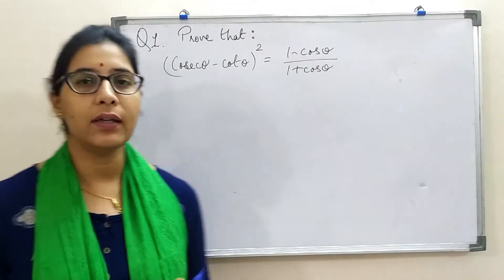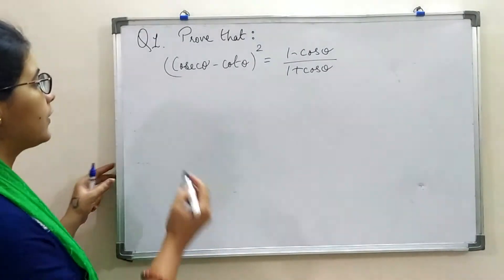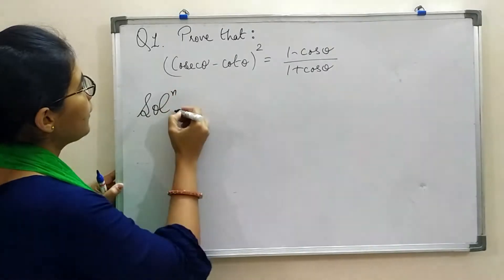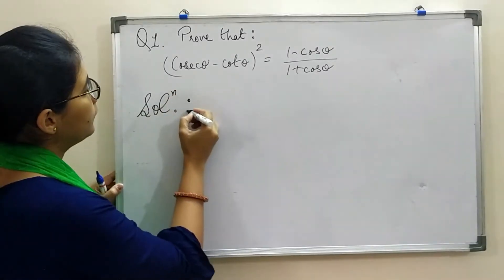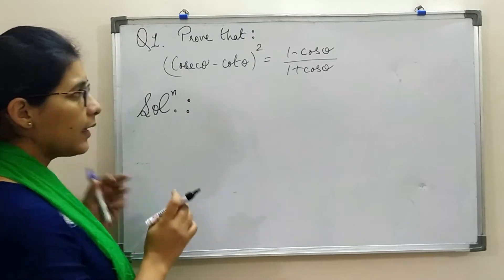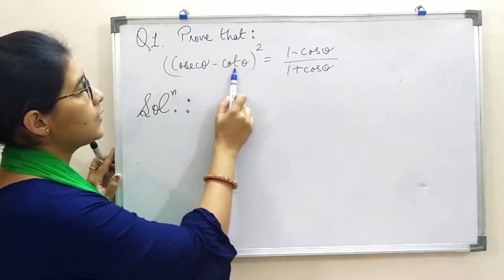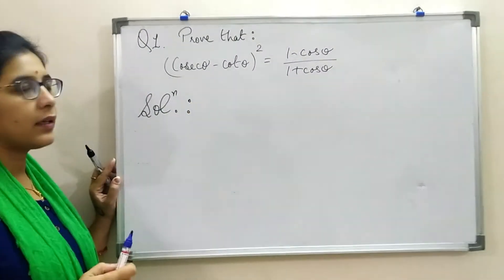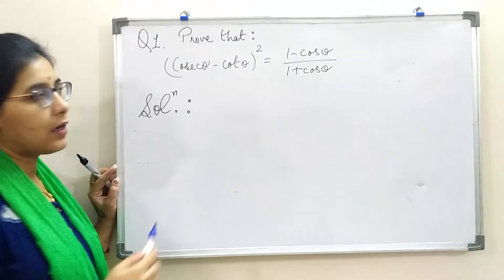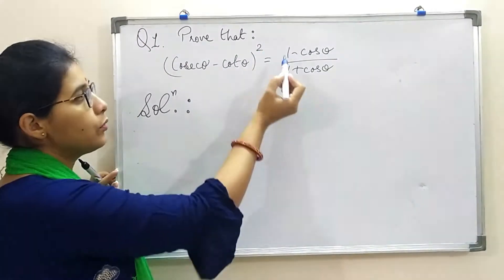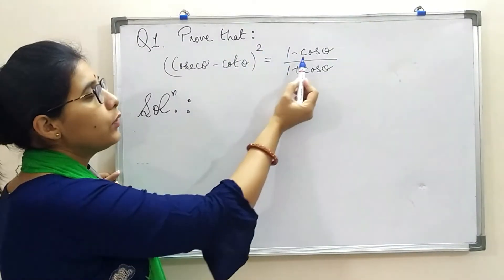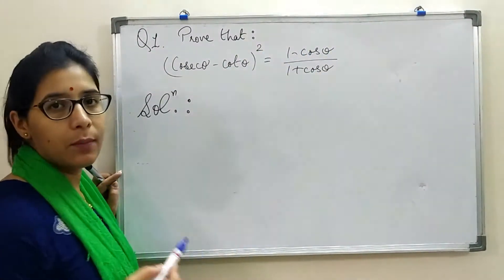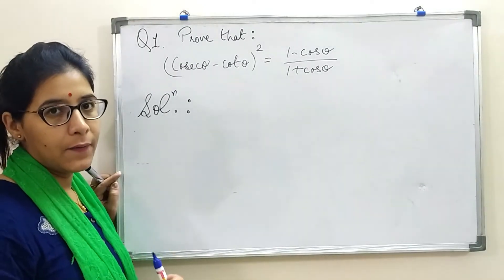So let's start with the solution. We will take the LHS part. This is the given sum: (cosec theta minus cot theta) whole square is equal to (1 minus cos theta) upon (1 plus cos theta).